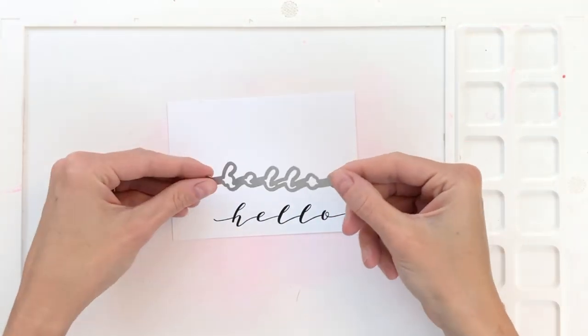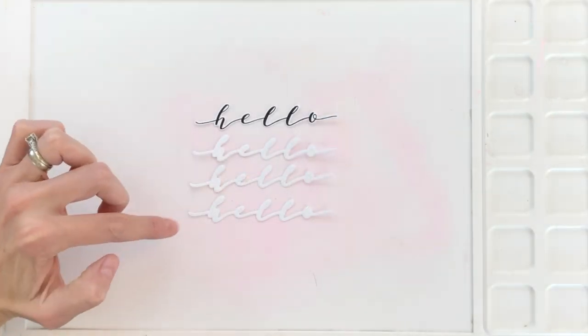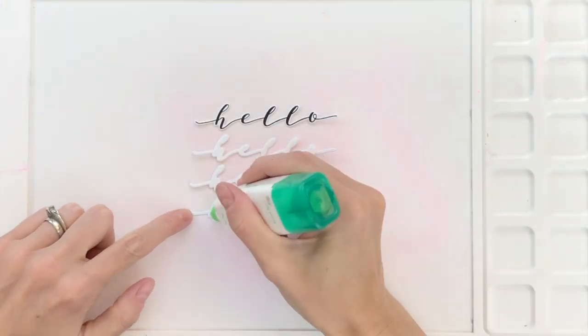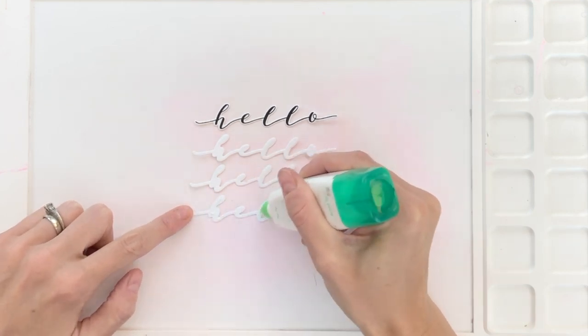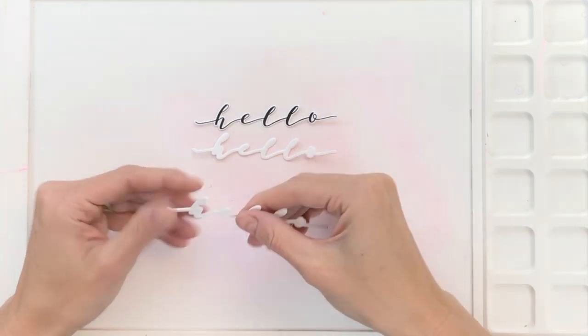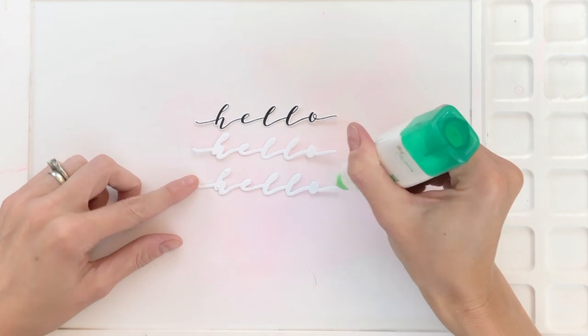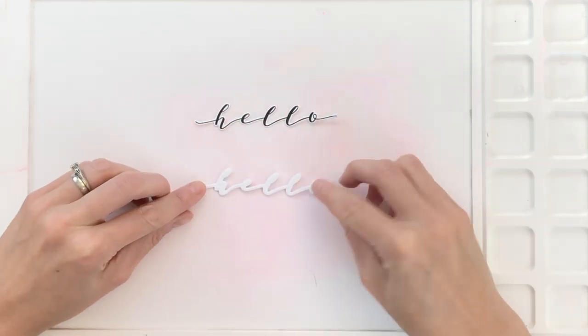I'm now going to use the matching die in this set and die cut out the hello as well as three other unstamped hellos. I'm going to stack these unstamped hellos on top of each other. This is just to provide some dimension so this hello sentiment pops a little bit away from that watercolor background.